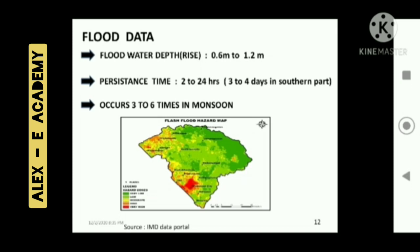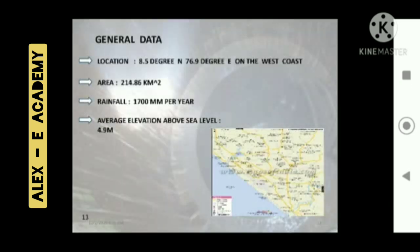The occurrence of flood is 3 to 4 times in monsoon. This is the flash flood hazard map of Thiruvananthapuram City; areas marked in red are most likely to have flash floods and this map is used to identify affected regions quickly. General data: location is 8.5°N, 76.9°E on the west coast; area is 214.86 sq. km; rainfall is 1700 mm per year; average elevation above sea level is 4.9 meters.